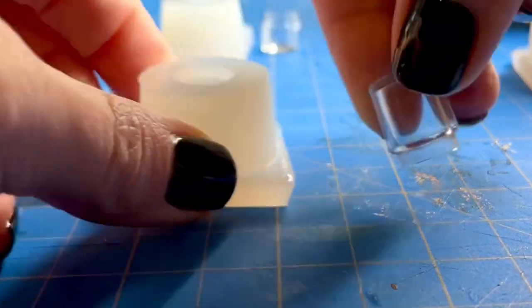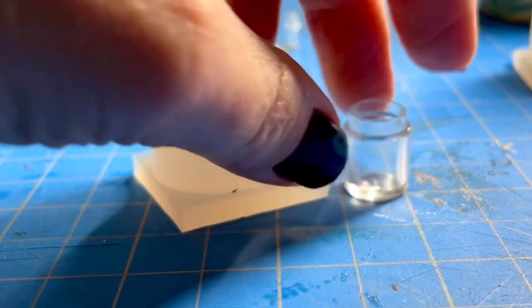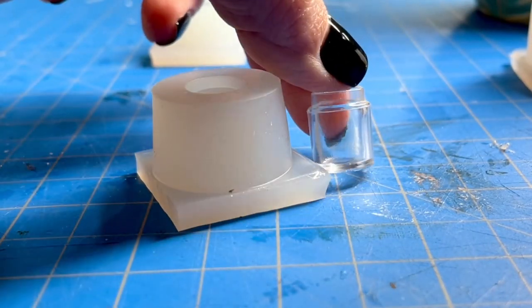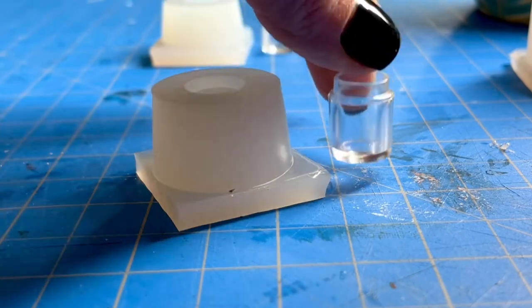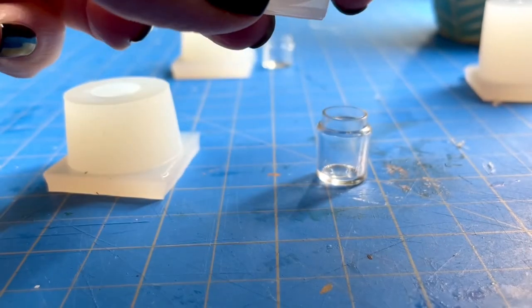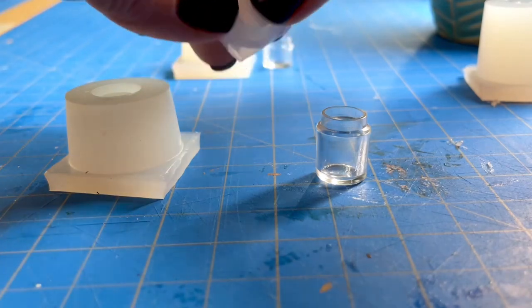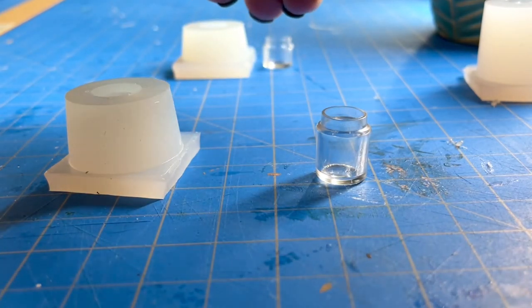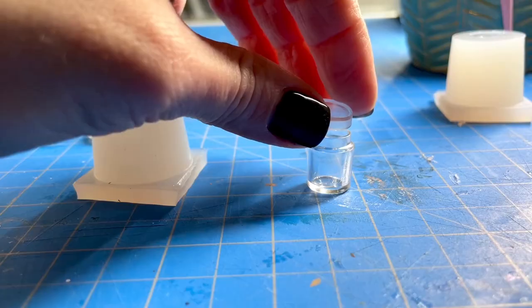Next up I'm removing the medium size jar and it turned out perfectly. No air bubbles. I am really impressed with these molds. They turned out so nice. And I'll also remove one of the lids. I really hope that these will fit. I'm a little bit nervous that they might not fit over the jars.